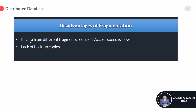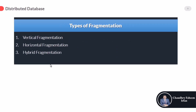Disadvantages of fragmentation include slower access speed when data from different fragments is required. There is also a lack of backup copies — access speed can be slower than with the replicated model, and due to the lack of replication, data may be lost. The types of fragmentation are vertical fragmentation, horizontal fragmentation, and hybrid fragmentation.